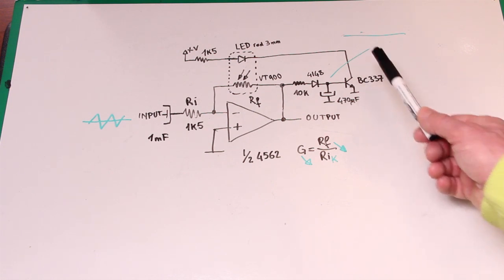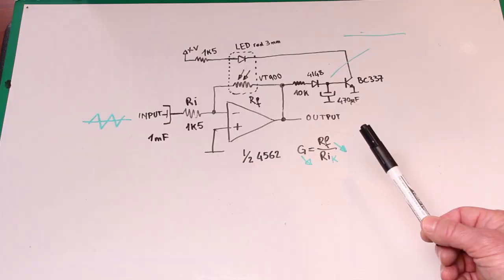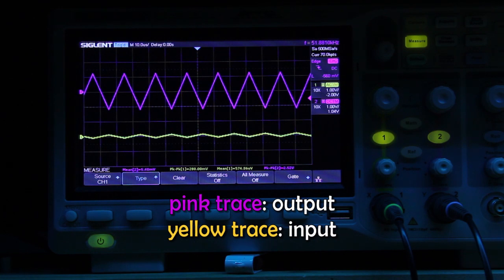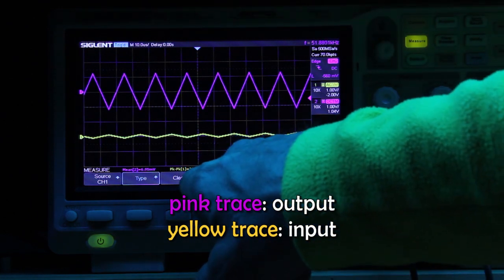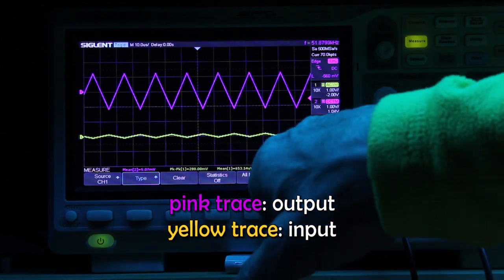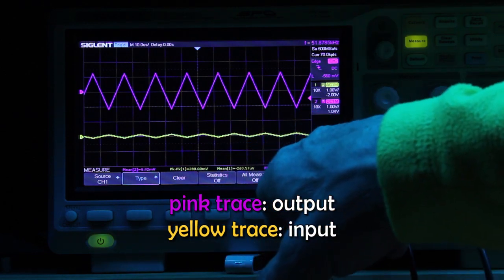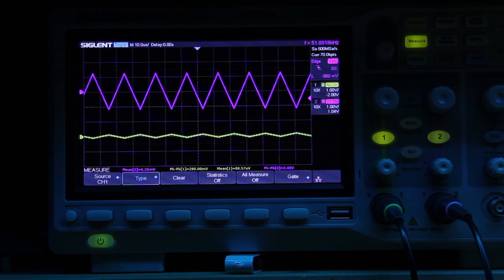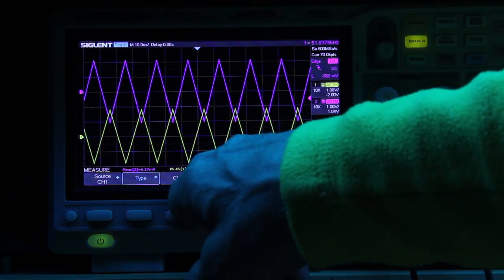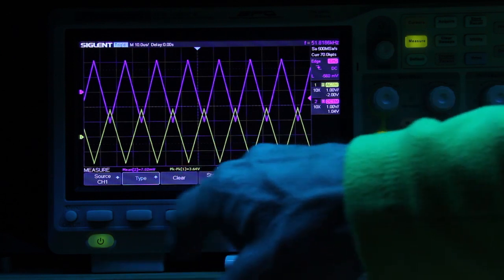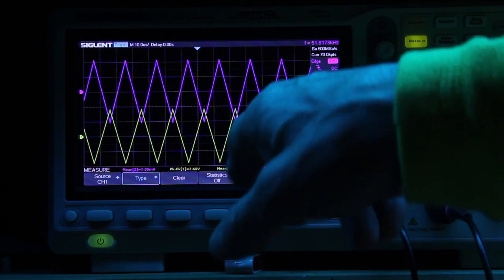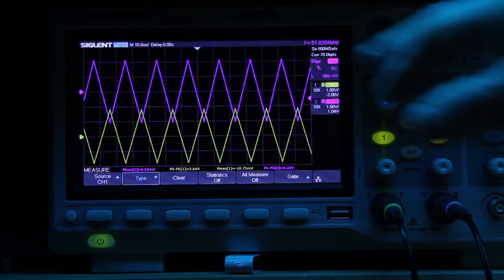So this is the input and this is the output. The input is now attenuated to have 280 millivolt and the output is 2.4 to 2.5 volt peak to peak. When I change the attenuation in input now I have 3.64 volt in input and 4.2 volts in output peak to peak.